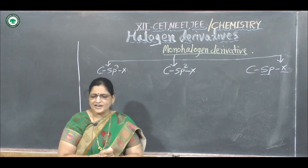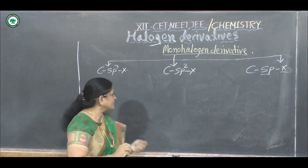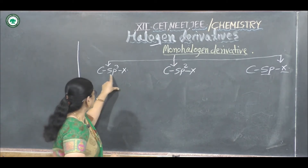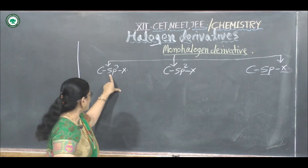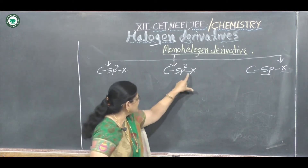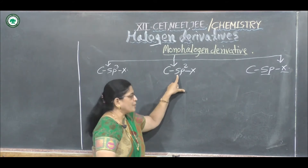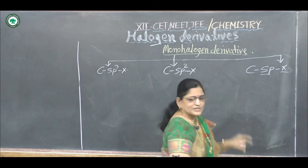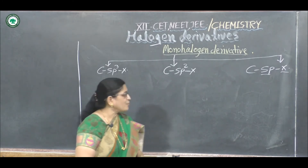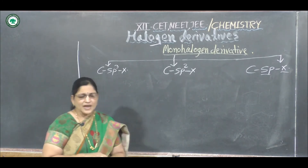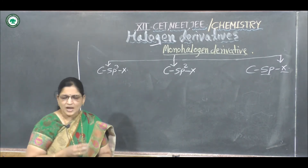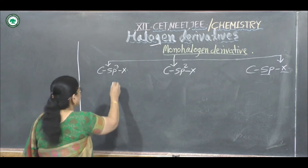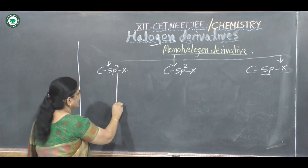These sp3 and sp2 type hybridized carbon-containing halogen compounds are again classified into three main classes: alkyl halides, allylic halides, and benzylic halides.